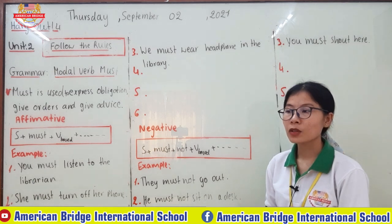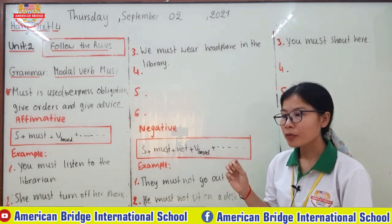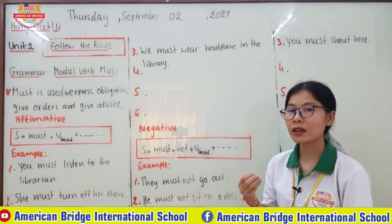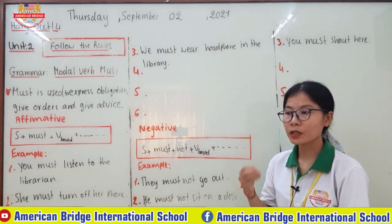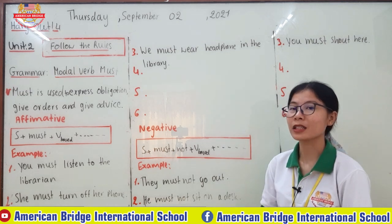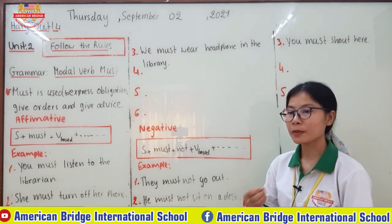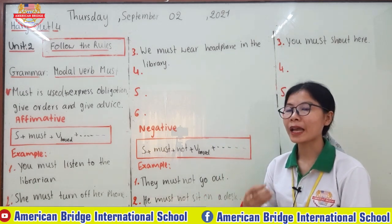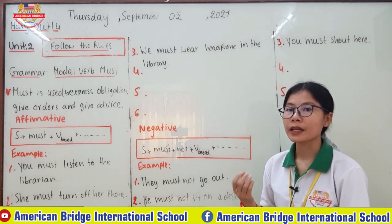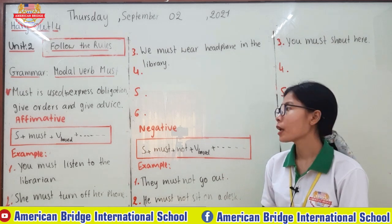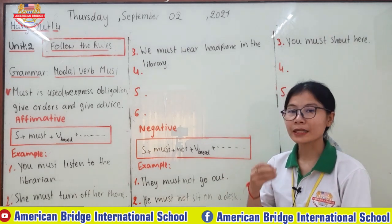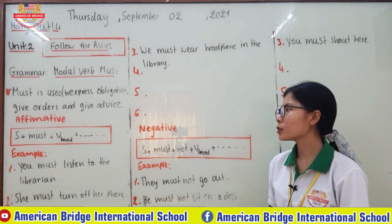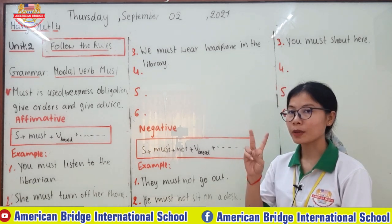When you give advice, you tell someone about something, but he or she might follow it or not — you don't know. You just suggest them. Advice means you give your own opinion or idea to correct his or her mistakes, or when you ask someone to do something.